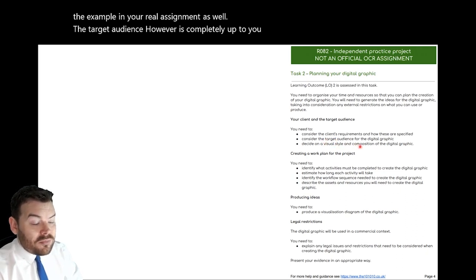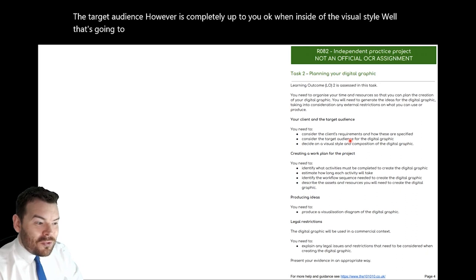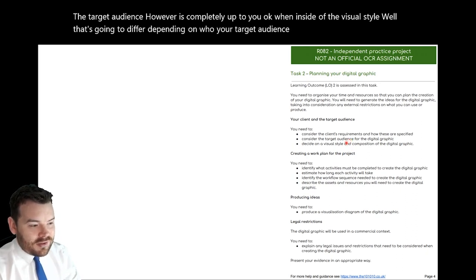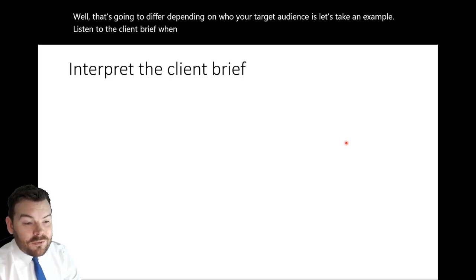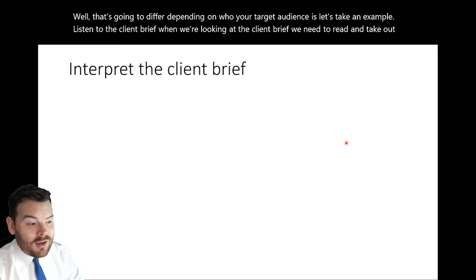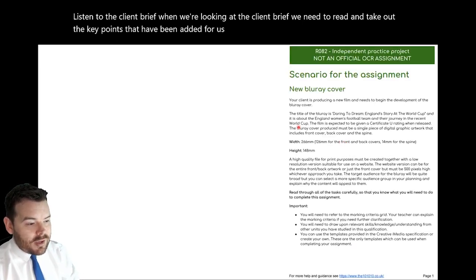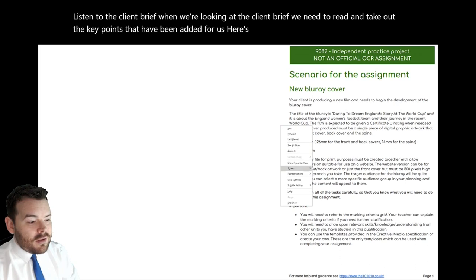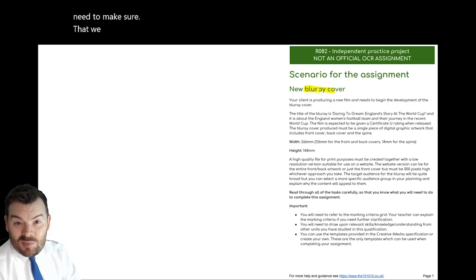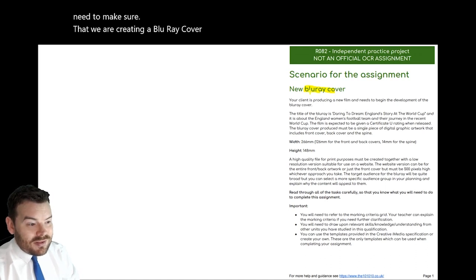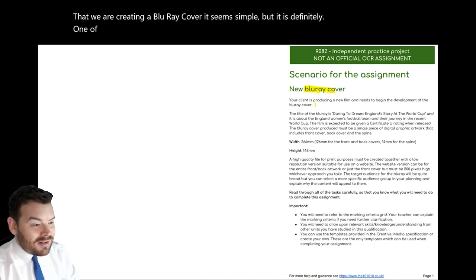When deciding on the visual style, that's going to differ depending on who your target audience is. Let's interpret the client brief. When we're looking at the client brief, we need to read and take out the key points. So here's that scenario again — there are certain things here which we have been asked to create. We need to make sure that we are creating a Blu-ray cover — it seems simple, but it is definitely one of the key things. We need to make sure that it has a particular title — that is a client requirement.